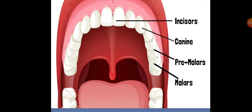Here we can see the location of the types of teeth in our mouth. The front teeth are incisors. At either side of incisors we have canines. At the back of canines we have premolars, and at the last corners of the jaw we have molars. The wisdom tooth appears at the back side of the molars — two in each jaw on either side.